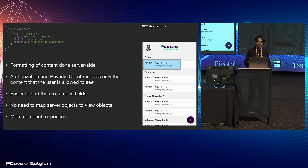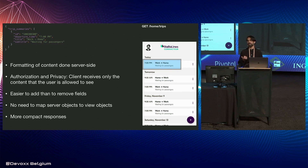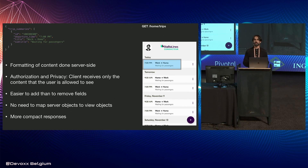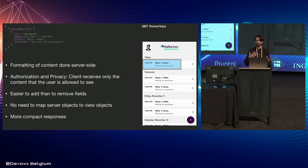We do this for several reasons. Some of the formatting can now be done server-side, reducing logic on the client. It's also easier to control what information we're allowed to send in that context. It's easier to add information later when iterating the API instead of removing fields already used by other client versions. There's less need to map server objects to client objects, and as a bonus we get more compact responses that are easy to deal with.